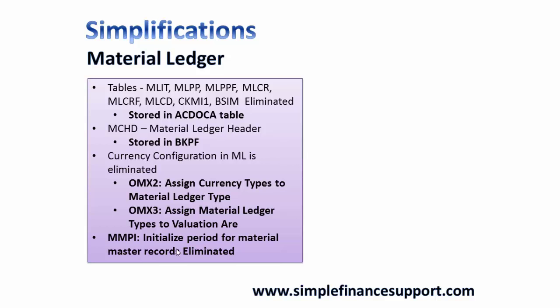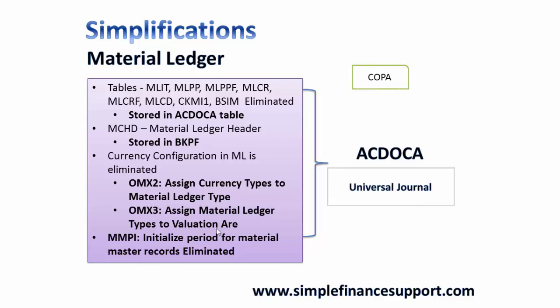Essentially the material ledger core functionality is built into your leading ledger. That is the reason you no longer have options such as assignment to valuation areas like plants — you don't need to assign, enable currencies, or do initial setups for the material ledger. All this information is stored in the ACDOCA universal journal table, and information for COPA and actual costing inventory valuation will also be derived from ACDOCA. This is the simplification brought into SAP S/4 HANA for material ledger.